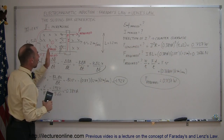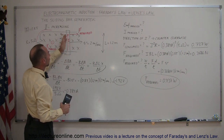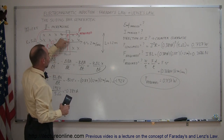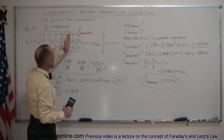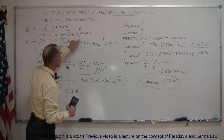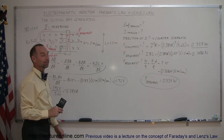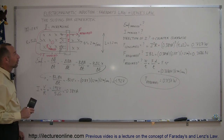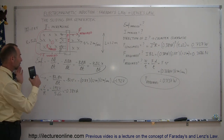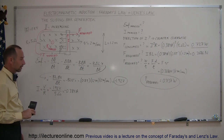All of the power required to move the bar — to overcome the force on the bar caused by the current in the loop acting on the magnetic field — is consumed entirely by the resistor in the circuit. This is a very good example of how you work with Faraday's Law and Lenz's Law.